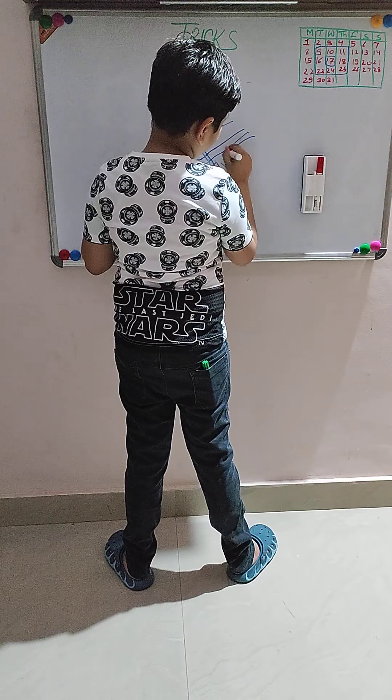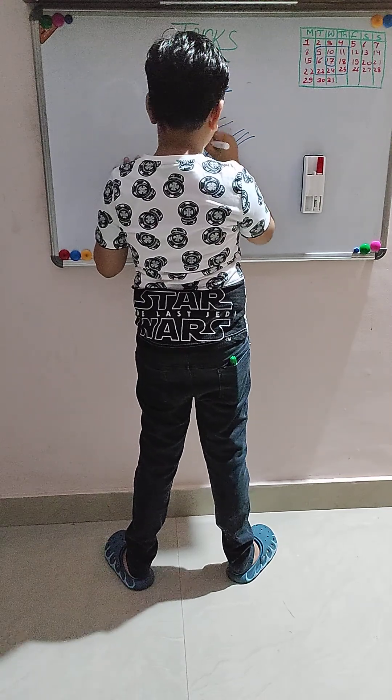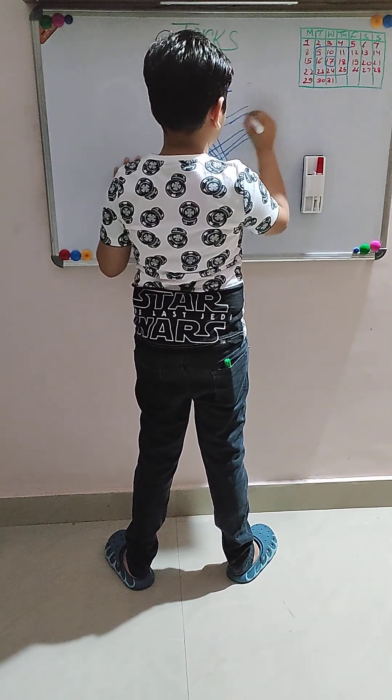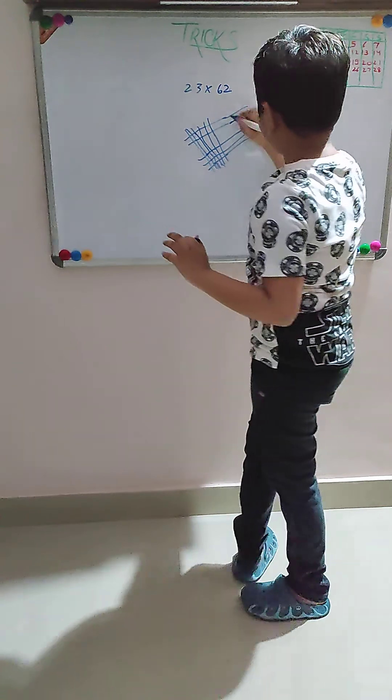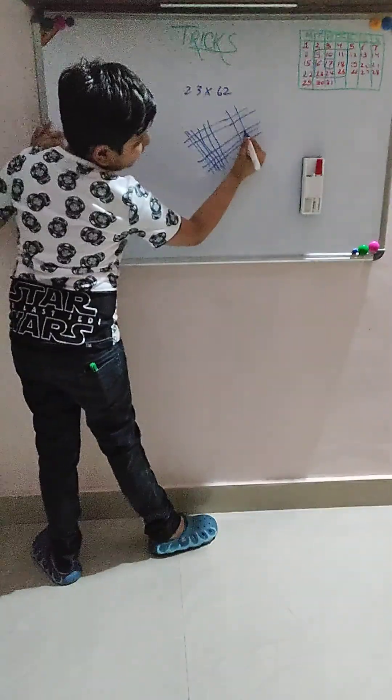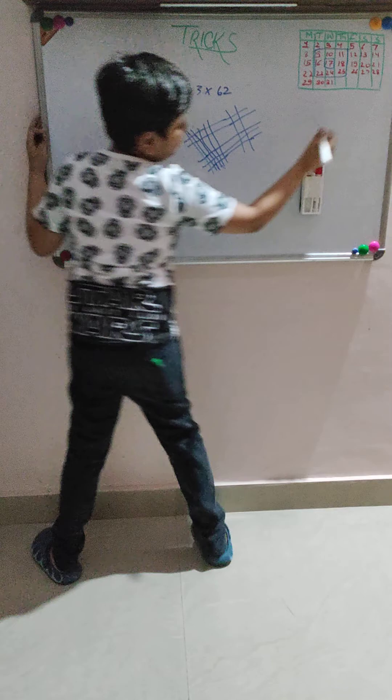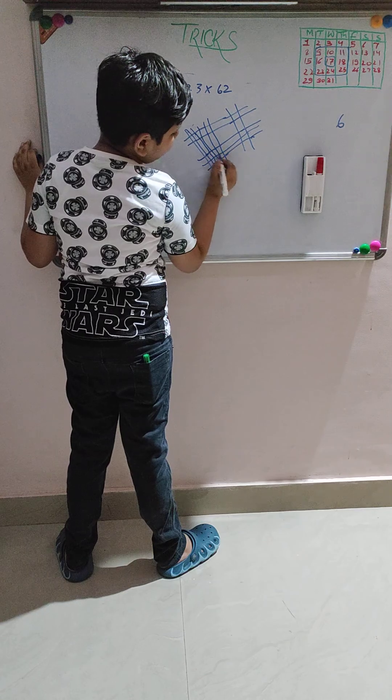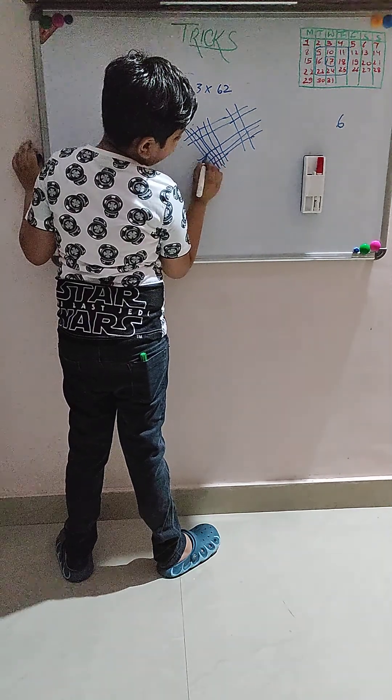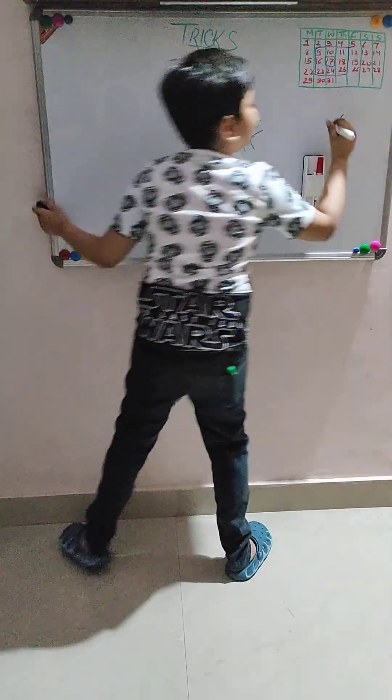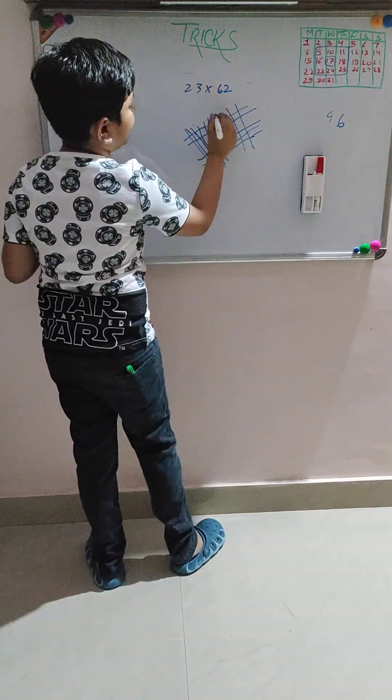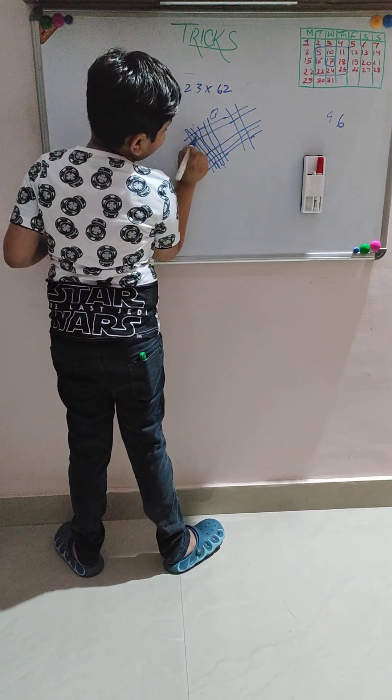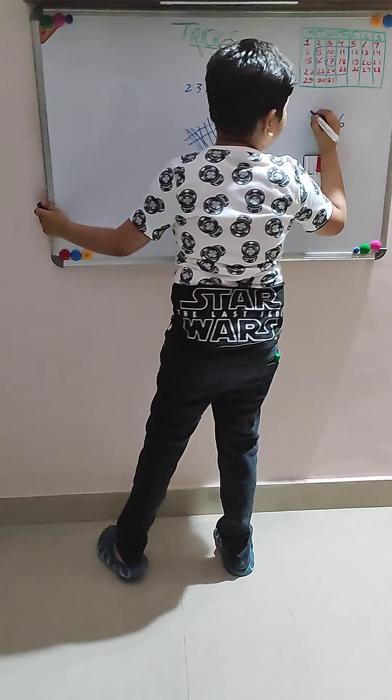I will try to explain everything. We draw the lines. Now we have to count: 1, 2, 3, 4, 5, 6... 15 plus 4 equals 19, carry 1. Then 1, 2, 3, 4, 5, 6, 7, 8, 9, 10, 11, 12, 13. And then 13. This is the answer: 1,426.